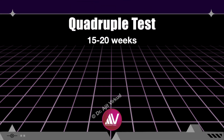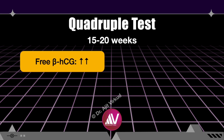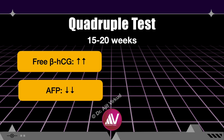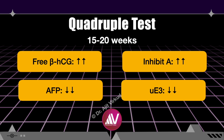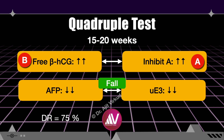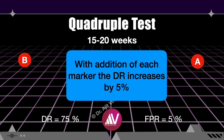The quadruple test, done between 15 to 20 weeks of gestation, involves testing four markers: free beta-hCG, alpha-fetoprotein, unconjugated estriol, and inhibin A. A way to remember which markers increase and which decrease: A and B increase — free beta-hCG increases and inhibin A increases — whereas unconjugated estriol and alpha-fetoprotein fall. This test has a detection rate of 75 percent and a false positive rate of five percent. It can also screen for neural tube defects; the detection rate for spina bifida is around 80 percent. Remember: with each marker added, the detection rate increases by approximately five percent.